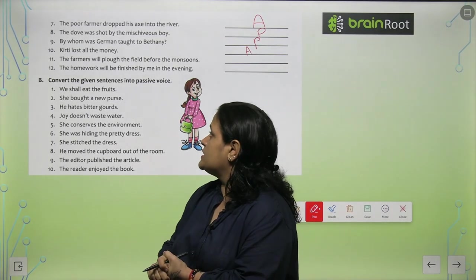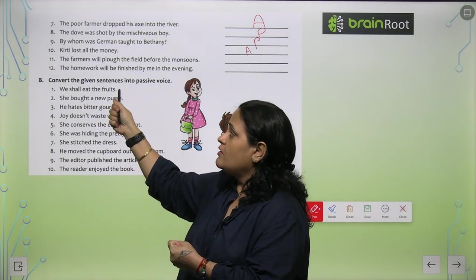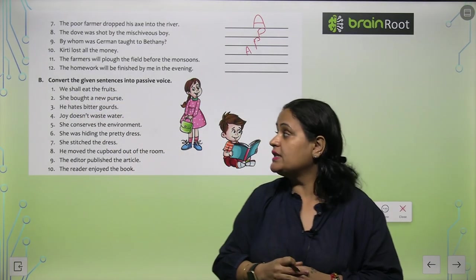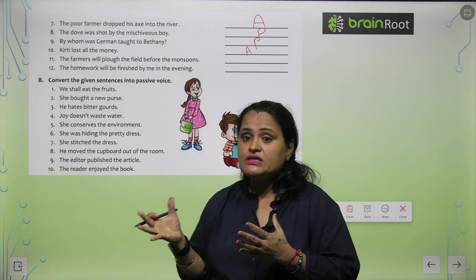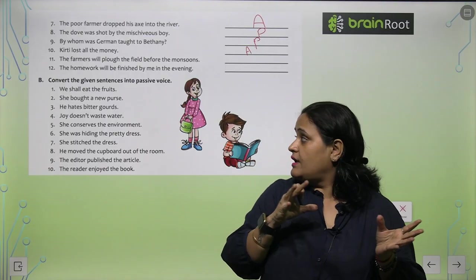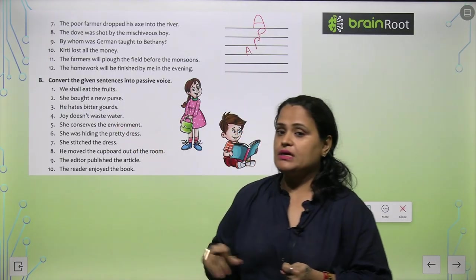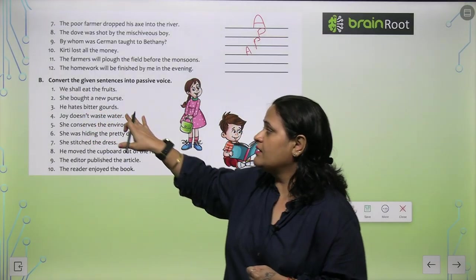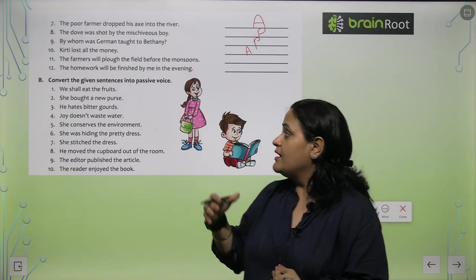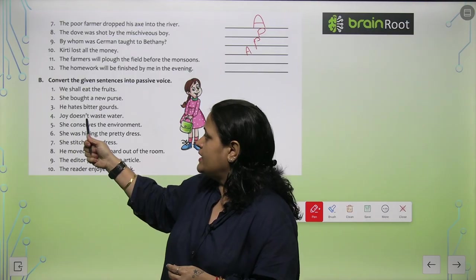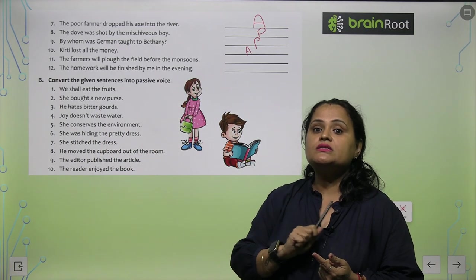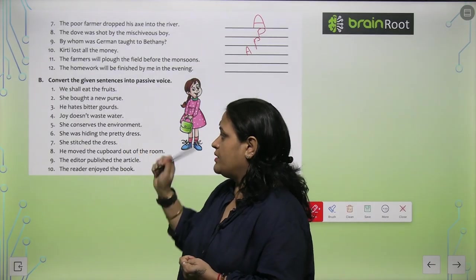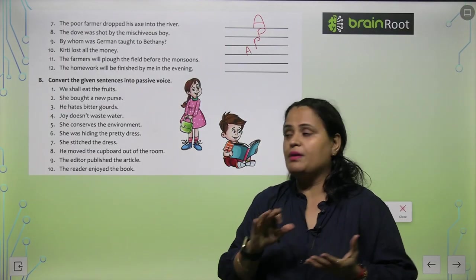Now convert the given sentences into Passive Voice: 'We shall eat the fruits' — Fruits will be eaten by us. 'She bought a new purse' — A new purse was bought by her. 'He hates bitter gourd' — Bitter gourd is hated by him. 'Joy doesn't waste water' — Water is not wasted by Joy. 'She conserves the environment' — The environment is conserved by her.